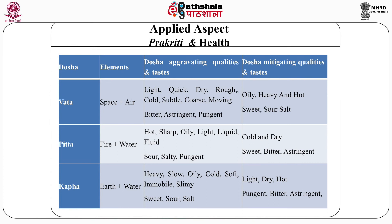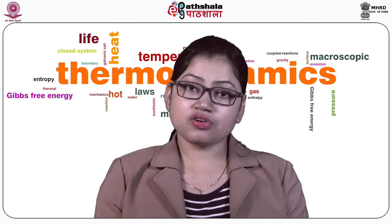Based on the composition of vata, properties like light, quick, dry, rough, cold, subtle, coarse and moving aggravate vata, while oily, heavy and hot qualities mitigate vata. By following these basic guidelines, we can prevent various disorders and health can be restored. Yoga and pranayama also help in attaining sound mental health.